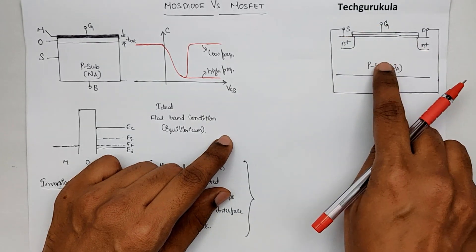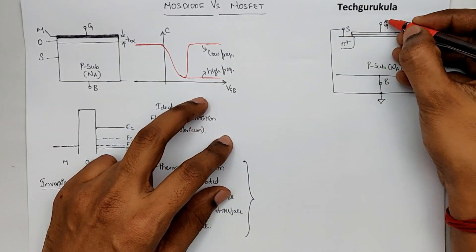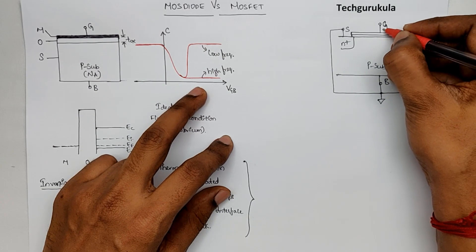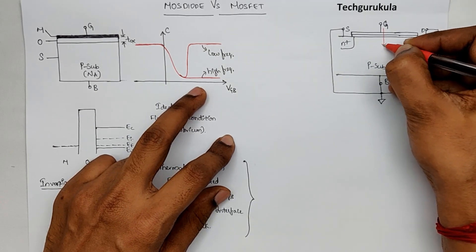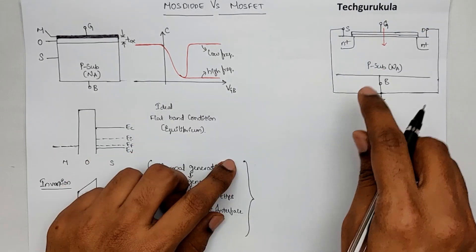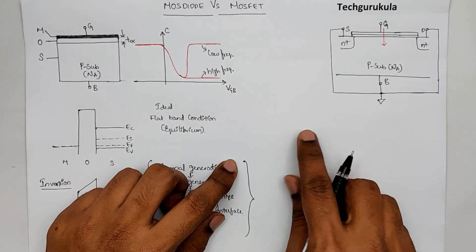Of course, when I draw from this direction, that is gate, oxide and semiconductor this way, the energy band diagram would look like this.